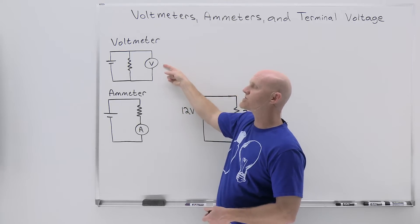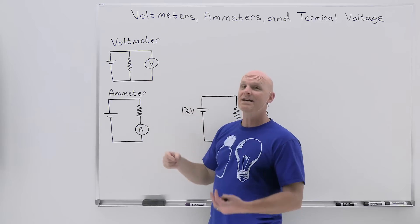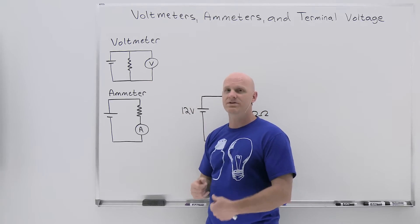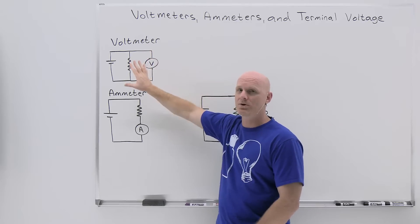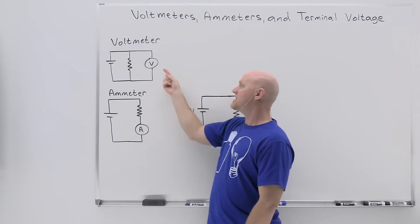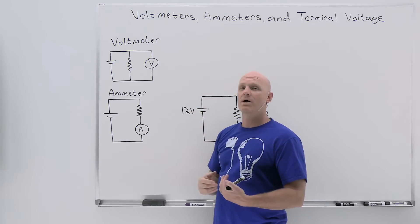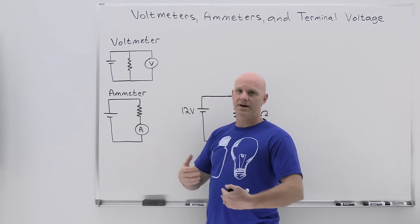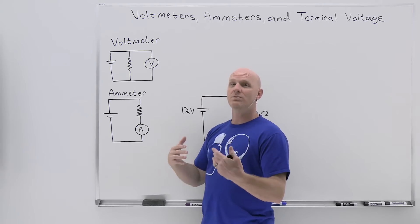You might recall from our last lesson that resistors in parallel have the same potential difference across them. So we're really measuring the potential difference across the resistor in the voltmeter, but because it's in parallel with the resistor of interest, it will be the same potential difference. Now we want to affect the circuit overall as little as possible. The way we're going to accomplish that is by using a very large resistor in our voltmeter. In fact, when we talk about an ideal voltmeter, a theoretical construct, it has infinite resistance.